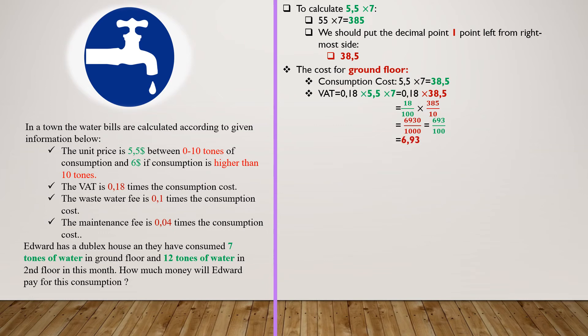The waste water fee is 0.1 multiplied by consumption cost. We know that 0.1 is 1 divided by 10, and 38.5 is 385 divided by 10. If we multiply these fractions, we will have 385 divided by 100, which is 3.85 in decimal form.